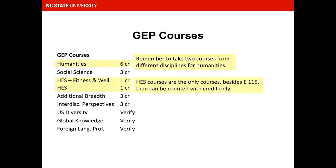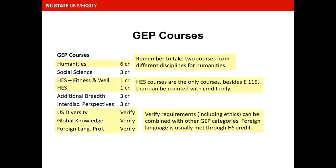Physical Education, or HES, courses are the only courses besides E115 that can satisfy degree requirements when taken for credit only. Note the verify requirements at the bottom of the GEP list — Ethics is also a verify requirement. This means a course from another credit-bearing GEP category can also fulfill this requirement.